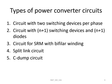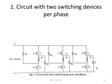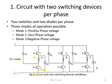Many types of power converter circuits are available for a Switched Reluctance Motor, and five types are listed here. Moving on to the first type: circuit with two switching devices per phase. In the circuit, the SRM has three phases A, B, and C. Each phase has two switches and two diodes. Phase A has switches T1 and T2, and diodes D1 and D2. Phase B has T3, T4, D3, and D4. Phase C has T5, T6, D5, and D6.